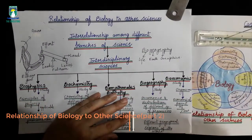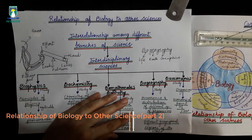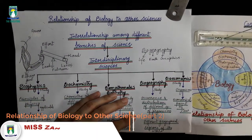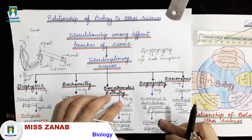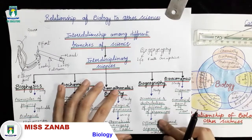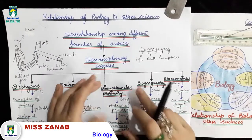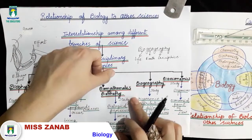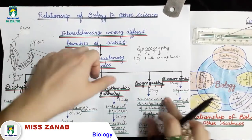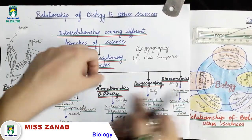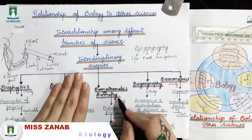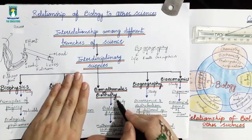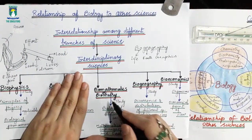Okay students, as you know we are discussing the relationship of biology to other sciences. Now we will discuss our remaining interdisciplinary sciences. The next one is Biomathematics, also called Biometry.